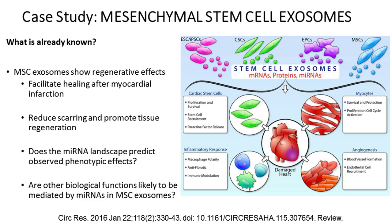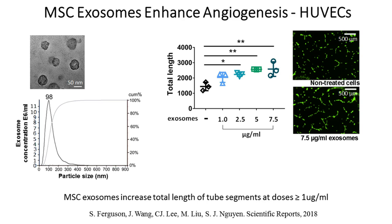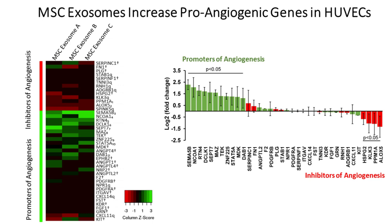We and others have shown that MSC exosomes are able to mediate angiogenic effects in a dose-dependent manner. With increasing concentrations of exosomes, as shown on the right-hand side, we can increase the total length of tube segments. MSC exosomes visibly promote the formation of branching in HUVECs, shown in the bottom image at 7.5 micrograms per milliliter. To examine the mechanism, we performed RNA sequencing on HUVECs treated with MSC exosomes.